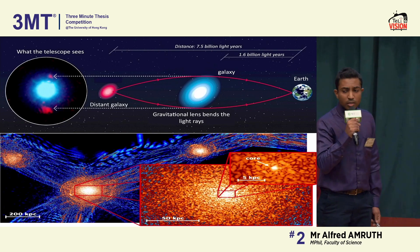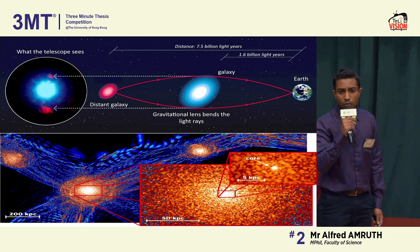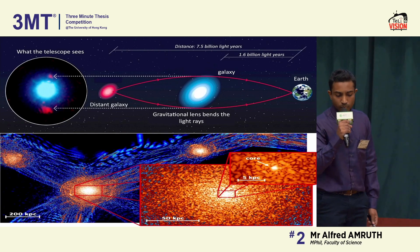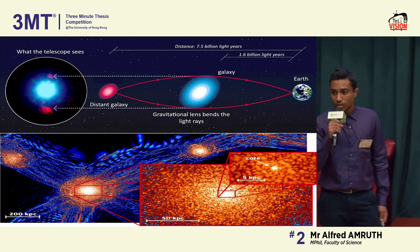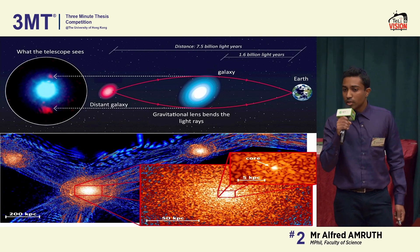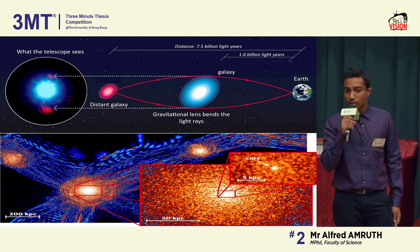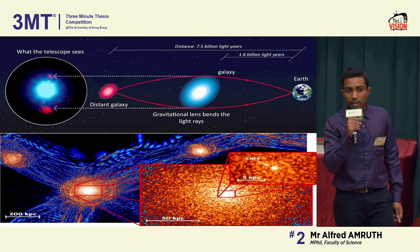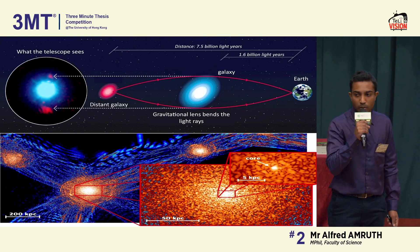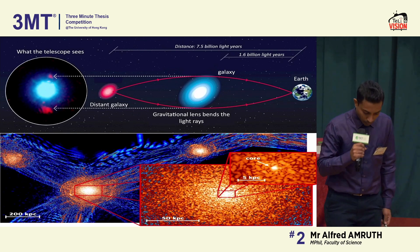So if we can't see it, then how do we study it? Well, Albert Einstein saved us the trouble with his prediction of gravitational lensing, which states that anything with mass can bend the path of light.